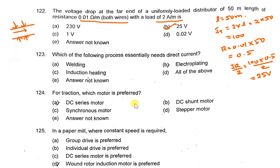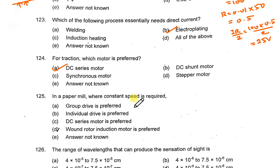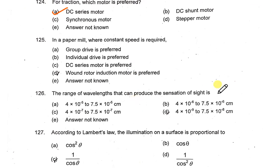The process that essentially needs direct current is electroplating. For traction, the DC series motor is preferred because of its high starting torque. In a paper mill where constant speed is required, an individual drive is used.